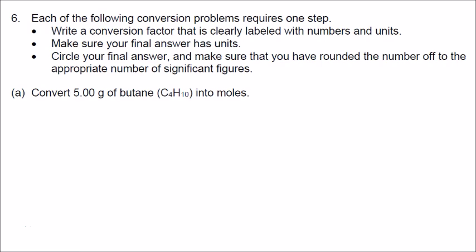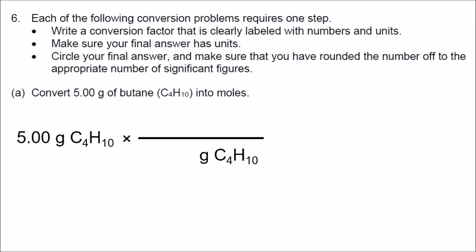Number 6: each of the following conversion problems requires one step. Write a conversion factor clearly labeled with the numbers and units, make sure your final answer has units, and round off to the appropriate number of significant figures. We start in part A with 5 grams of butane, which has the formula C4H10. We draw the line for our conversion factor. Focusing on the units, let's put grams of butane on the bottom to cancel those units, and since we are converting into moles of butane, let's put moles of butane on the top. Because we're dealing with mass — the number of grams in one mole — this involves the periodic table.